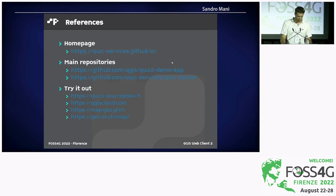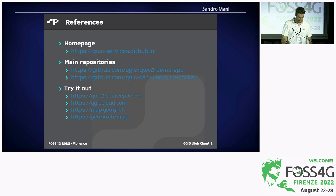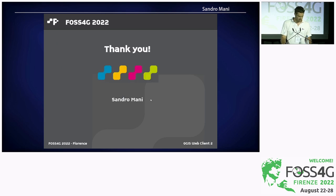Some references: the homepage for the entire application ecosystem is qwc-services.github.io. The two main repositories are the qwc-demo application and the qwc-services Docker repository. There are various existing instances where you can try it out. The SourcePole demo application more or less represents the current state of the application. QGIS Cloud uses QWC services as its viewer, so it's also an interesting reference. And there are existing deployments from Glarus and Solothurn in Switzerland. That's about it — thank you for your attention, and I'm happy to take any questions.